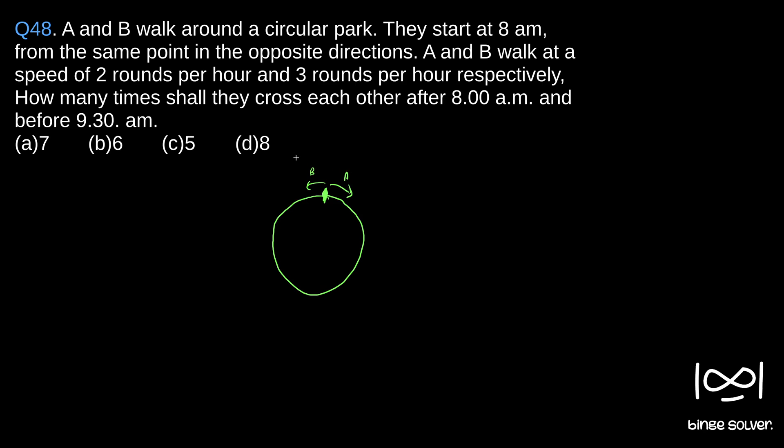Since their speeds are respectively 2 rounds per hour and 3 rounds per hour, we will assume A is now traveling at a speed of 3 plus 2, which is 5 rounds per hour.